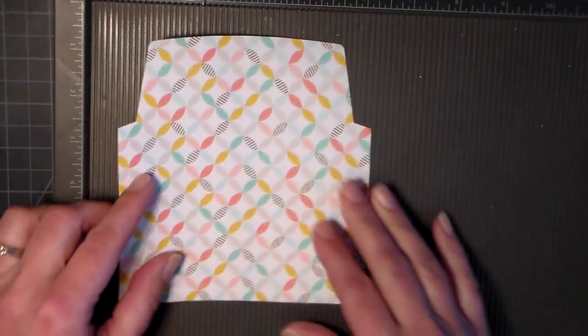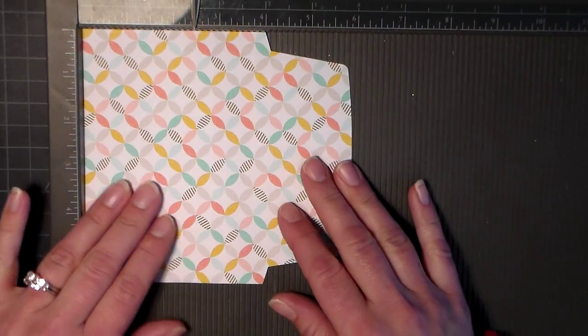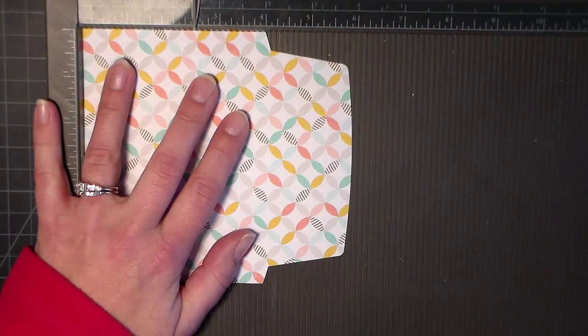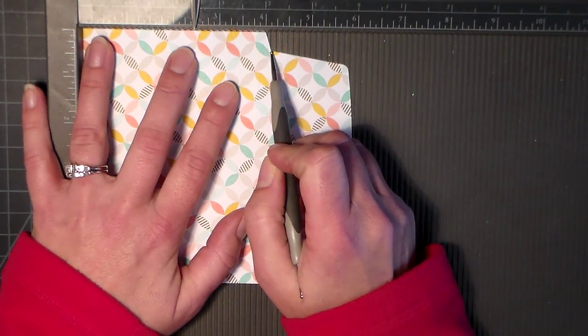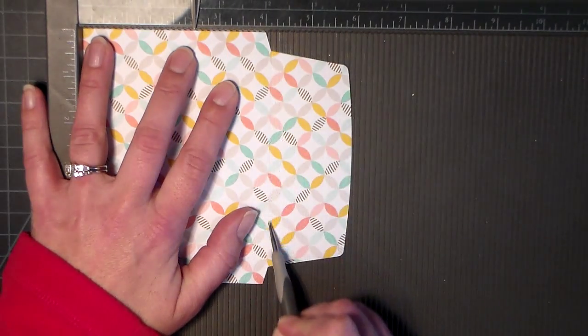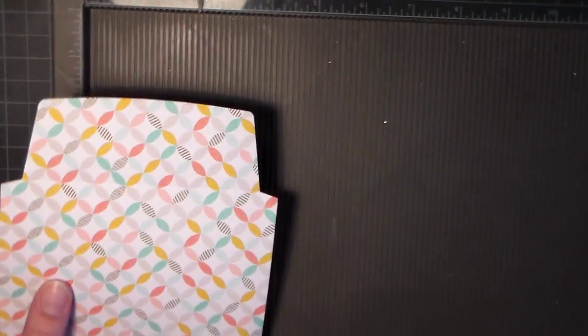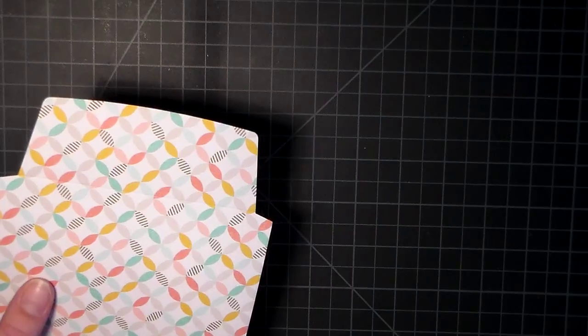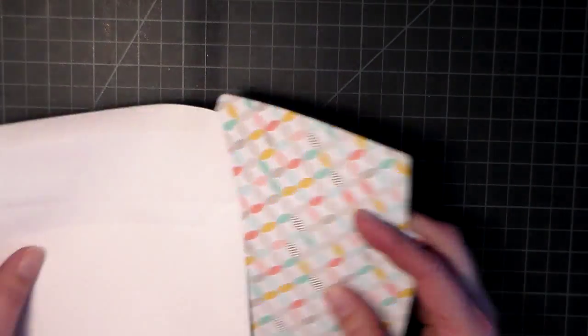I have my scoring tool here and I'm going to put a score line here where the notch is. We're going to go ahead and give that a good score. I don't want to push too hard because you can go all the way through your pattern paper.